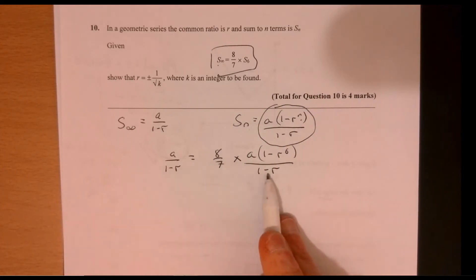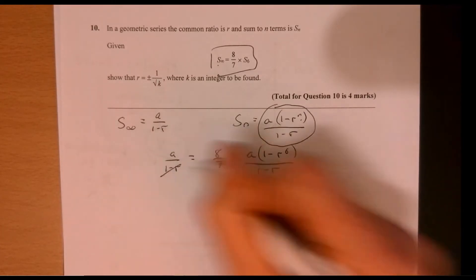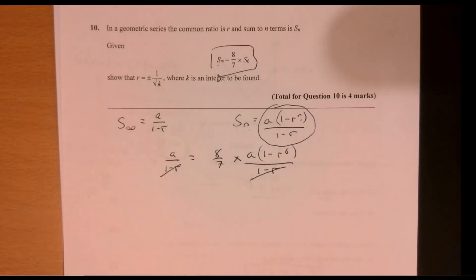They're both dividing by 1 minus R. So we can multiply effectively. So we can just get rid of those.